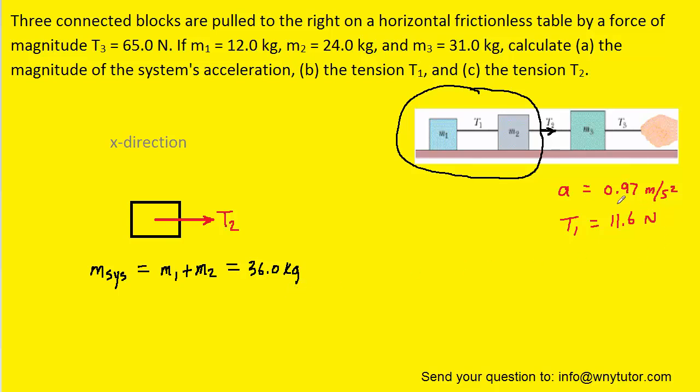Recalling that the acceleration was 0.97, we can turn to Newton's second law for a third time. We plug in the mass of our system of 36 kilograms and the acceleration of 0.97 meters per second squared. And T2 turns out to be approximately 34.9 newtons. And that is the correct answer to part C.